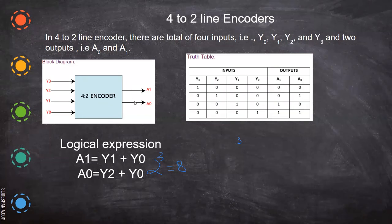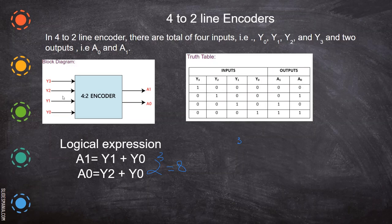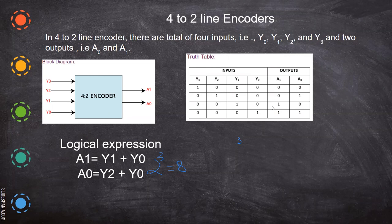Looking at the truth table: when the input is 0,0,0,1 the output is 0,0. When the input is 0,0,1,0, the output is 0,1. When the input is 0,1,0,0, the output is 1,0. And when the input is 1,0,0,0, the output is 1,1. Any one of the inputs will be enabled at a time, and depending on which line is enabled, you get the corresponding output.